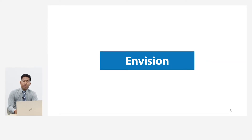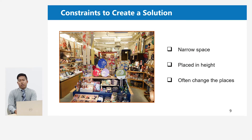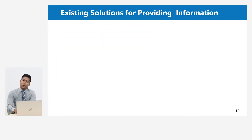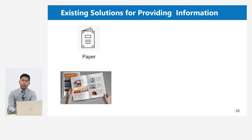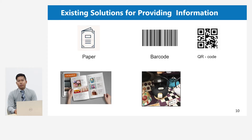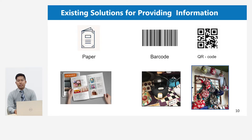Ambition is finding the suitable solution to solve the problem. There are some constraints we need to consider to create a solution, because they have a narrow space for the products, and some products are placed at height, and also employees frequently share the placement of products. The existing solutions for providing information include paper and catalogs, but they have limitations — they cannot cover all features of product information. Another solution is barcode and QR code, but products placed at height are difficult to identify by their barcode or QR code. Those are the challenges of using the existing solution.